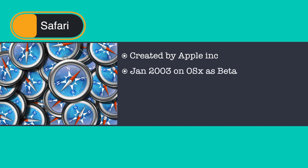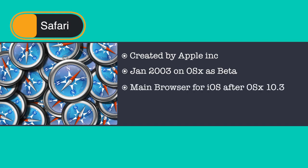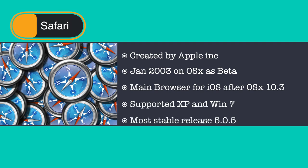Safari was first released as a public beta version on January 7, 2003 on Apple's Mac OS X operating system. It became Apple's default browser beginning with Mac OS X version 10.3 Panther. Safari is also the main browser for iOS. There is also a version of Safari for Microsoft Windows, supporting Windows XP and Windows 7. The most stable release is version 5.0.5, available as a free download for both Mac and Windows.